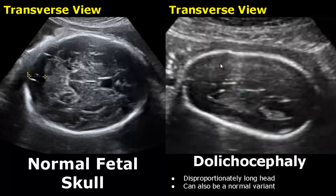Dolichocephaly is a disproportionately long head. You can see that the head is much longer than usual in this image. It can be a normal variant as well, but is also seen with breech presentation and oligohydramnios.